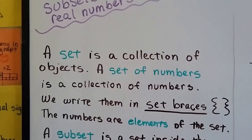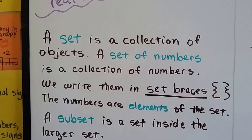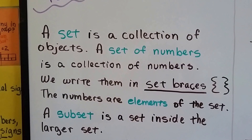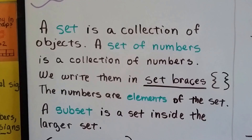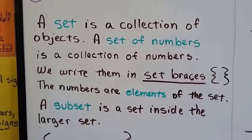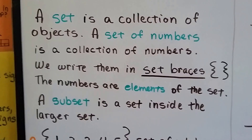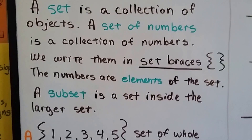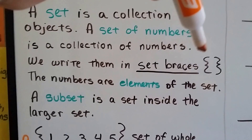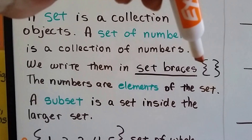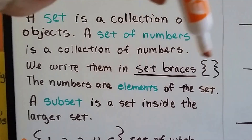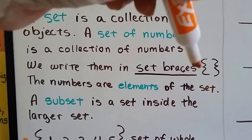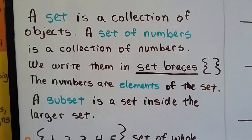A set is a collection of objects. A set of numbers is a collection of numbers. We write them in set braces — these squiggly lines, one on each side like parentheses. Those are set braces.